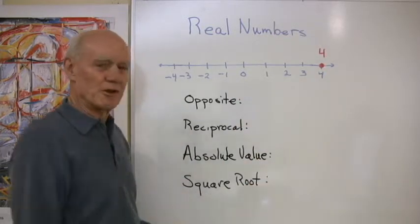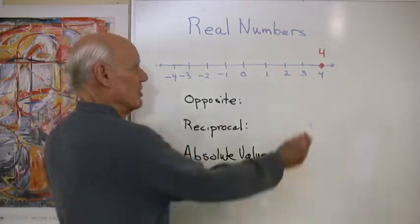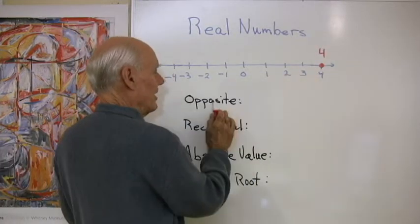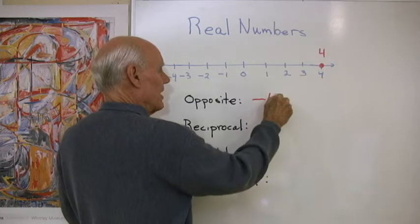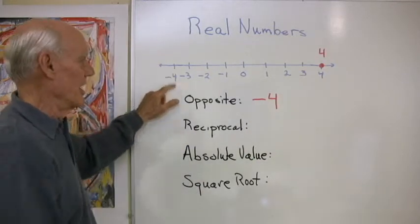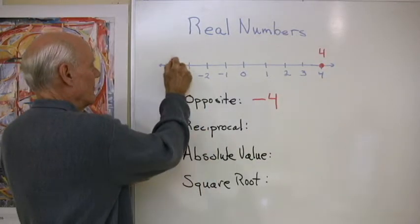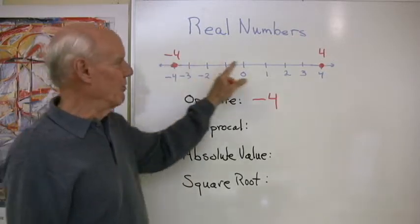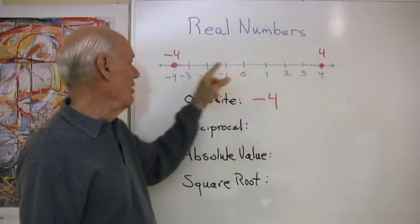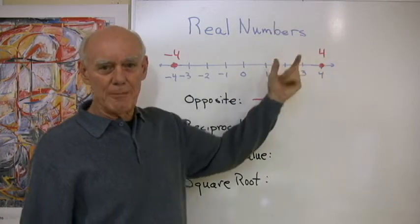So we want to look at some of these terms that are associated with real numbers. It's opposite. So for instance, if this is four, the opposite of four is negative four. It's this number down here. And the opposite of negative four is positive four. So four and negative four are opposites.